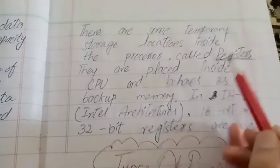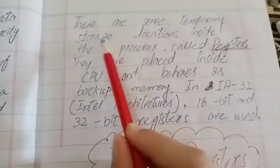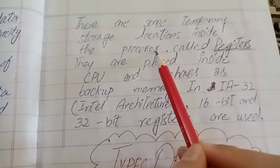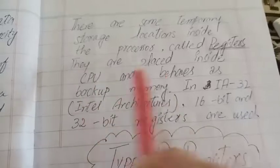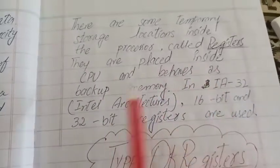What is the definition of Registers? There are some temporary storage locations inside the processor called Registers. They are placed inside CPU and behave as backup memory.